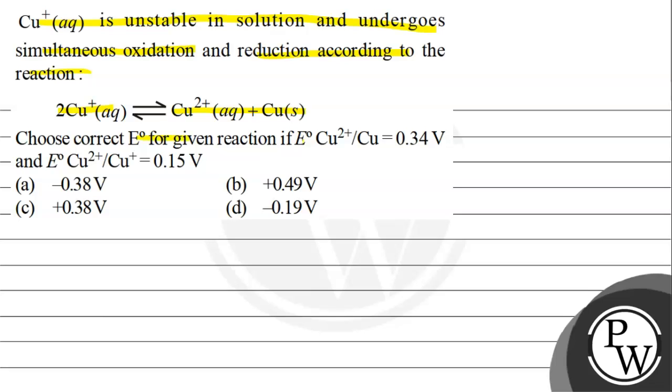We have to find E°. Given: E° Cu²⁺/Cu = 0.34V and E° Cu²⁺/Cu⁺ = 0.15V. Option A: -0.38V, Option B: +0.49V, Option C: +0.38V, Option D: -0.19V.